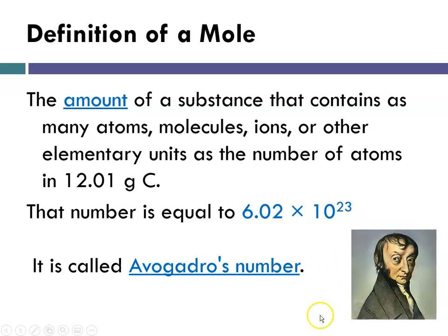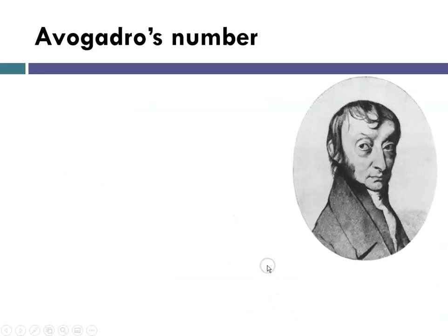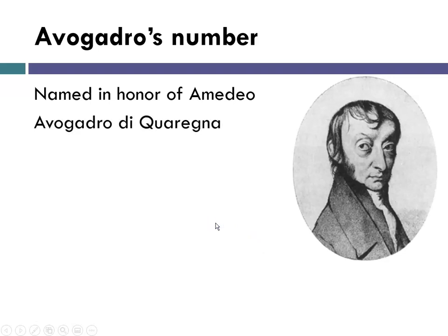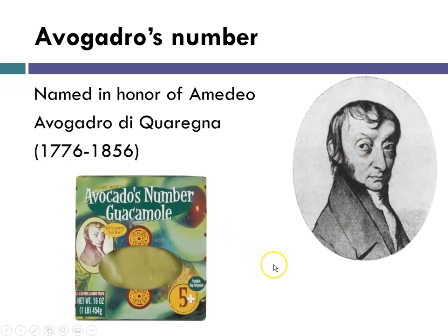Avogadro's number is named in honor of Amadeo Avogadro de Quaregna, who lived from 1776 to 1856. And I'm just going to show you a picture here of Trader Joe's guacamole. If you've ever gone to Trader Joe's and bought their guacamole, it's called Avogadro's number guacamole. On the packages of guacamole at Trader Joe's, look at that picture. It's the same one.